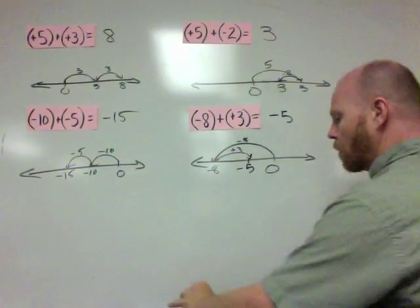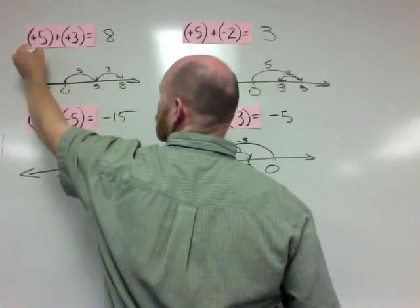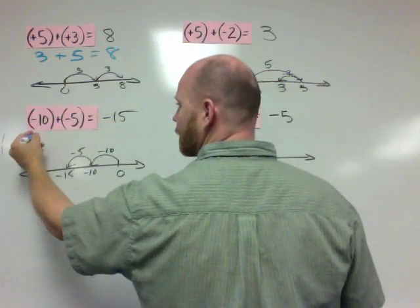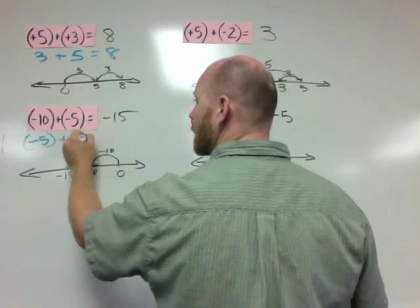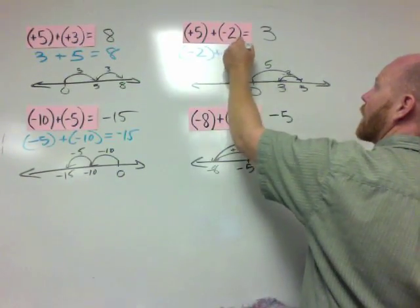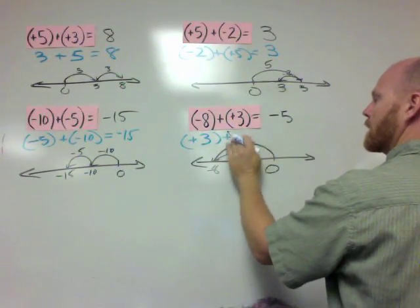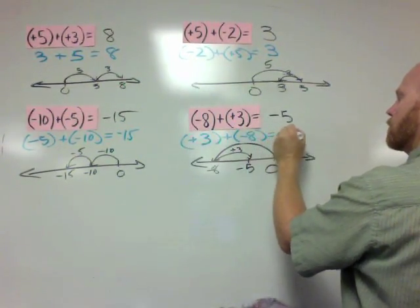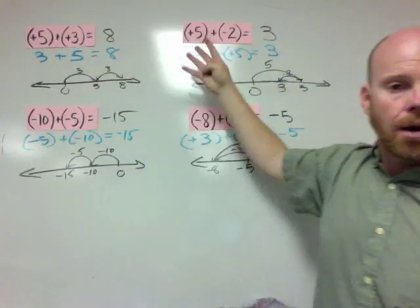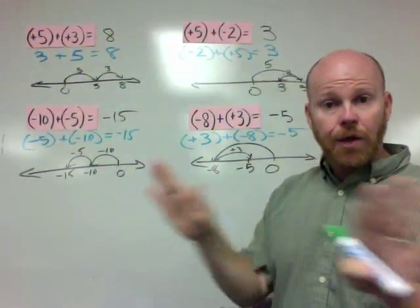Now in a previous lesson we learned that addition is commutative. So 5 plus 3 is 8, and so is 3 plus 5. Negative 10 plus negative 5 is negative 15, but so is negative 5 plus negative 10. And negative 2 plus positive 5 equals 3, and positive 3 plus negative 8 equals negative 5 still. The order doesn't matter and doesn't change the answer at all. What seems to matter is the numbers themselves, not the order they are in.